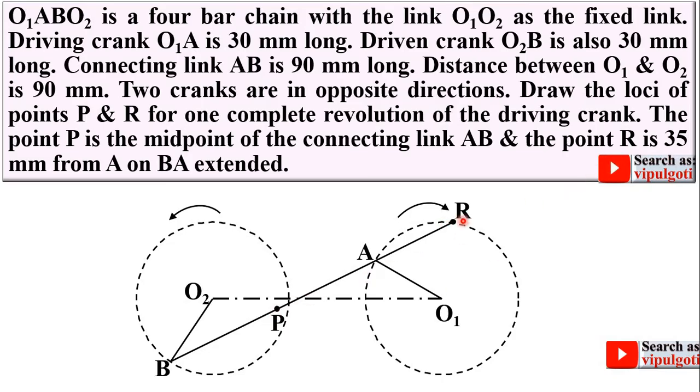The point R is 35 mm from A on BA extended. So here you can see BA is extended. In this problem our objective is to find the locus of the P point as well as locus of the point R.